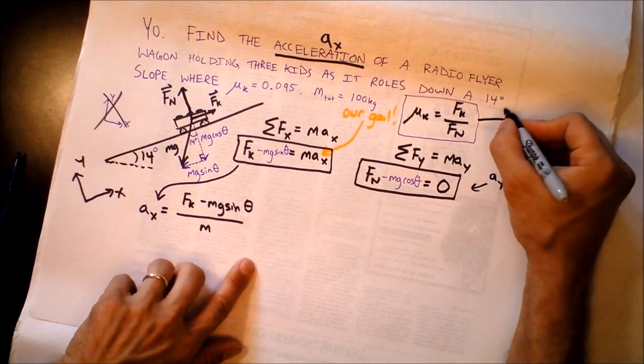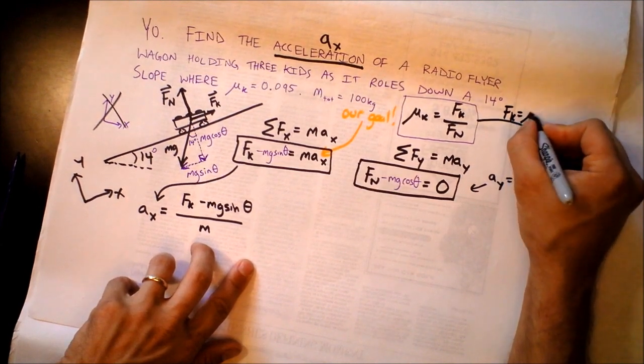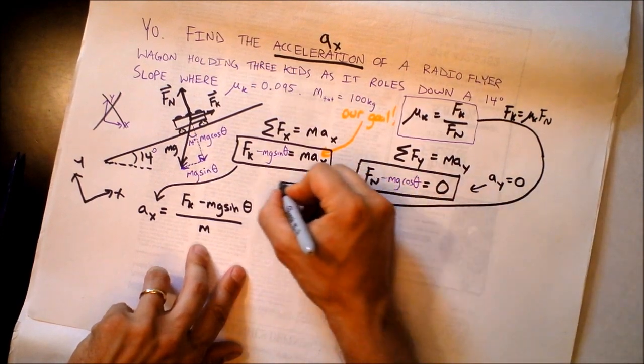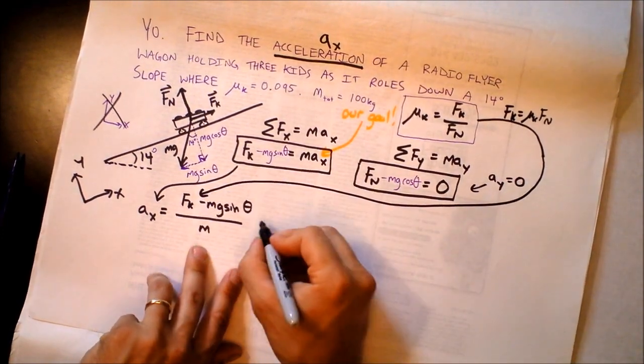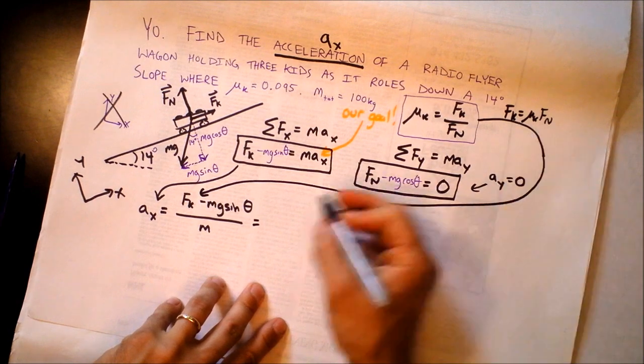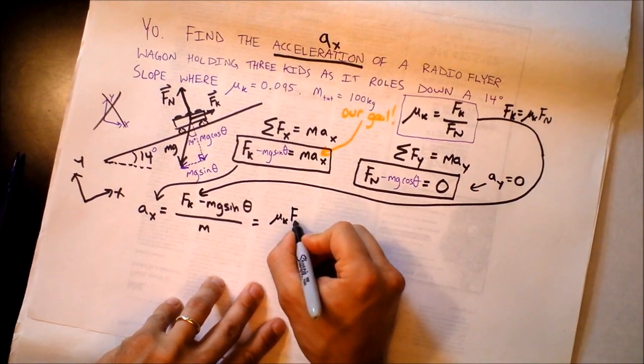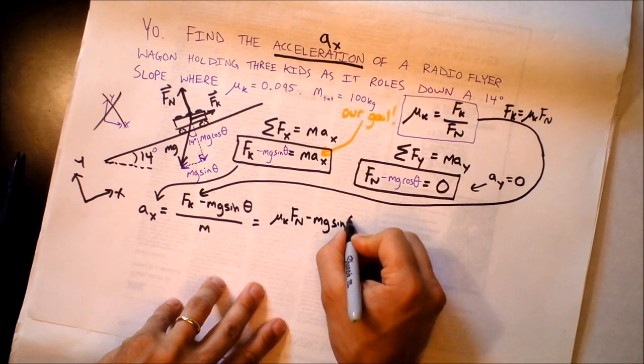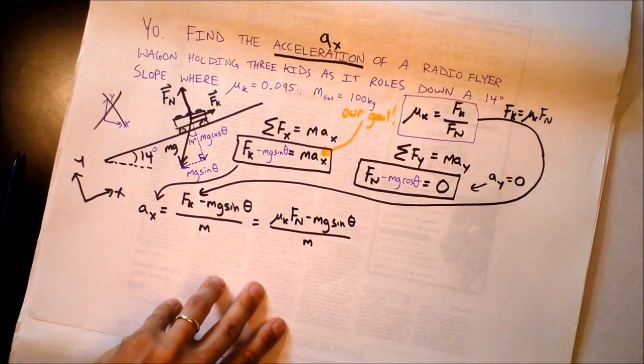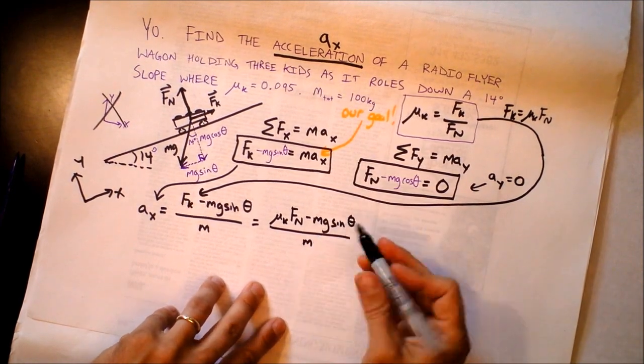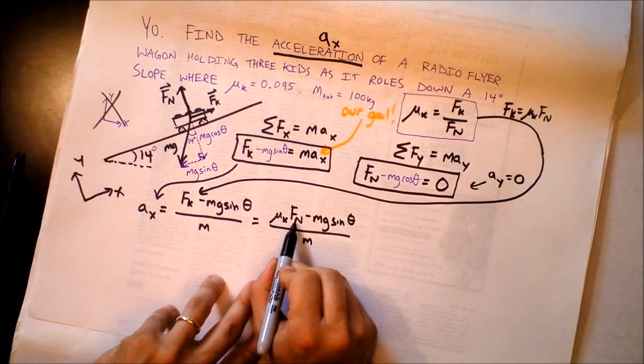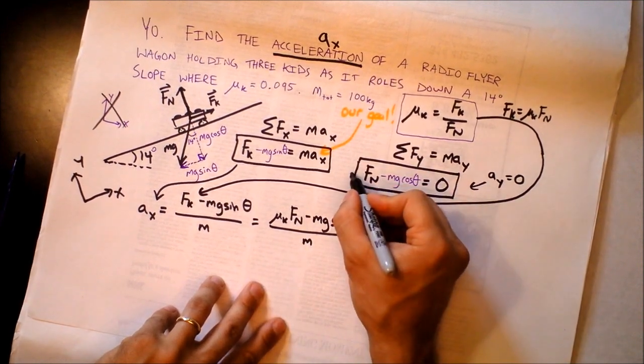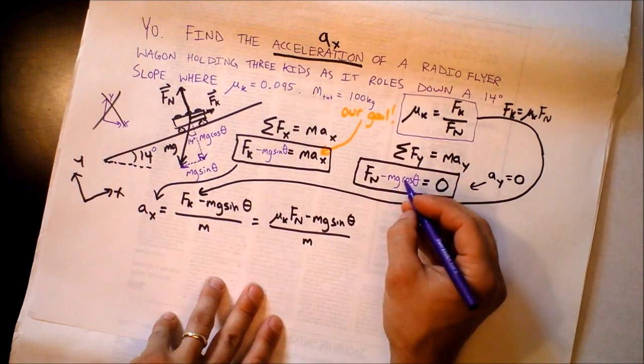So I'm going to take this equation right here. Maybe I should solve it for f sub k first. I would say f sub k is equal to mu sub k times f n. I'm going to take this equation and I'm going to plug it in for f sub k. And I'm going to get mu sub k times f n minus m times g times sine of theta divided by m. Now we still aren't finished because we don't know f sub n.